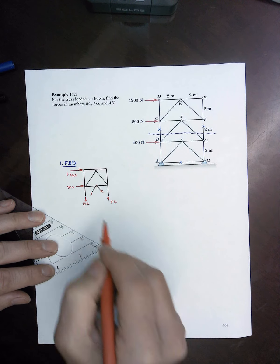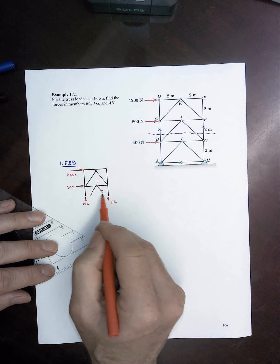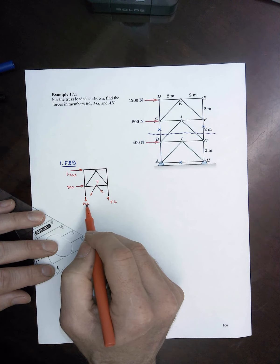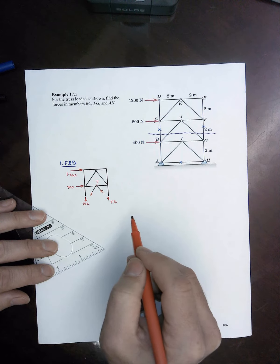So this actually begins to be kind of complicated. If I sum moments about point J, then, okay, I get rid of the two diagonals, but I still have FG and BC as unknowns. Sum forces in the Y, I got all four of these included. That's not very easy either.